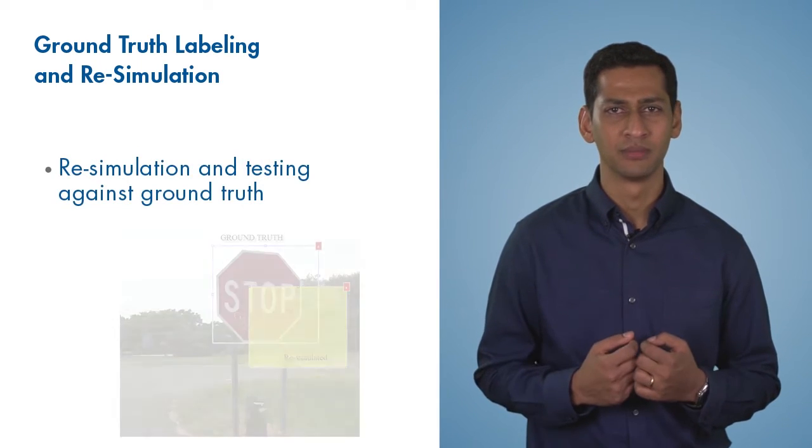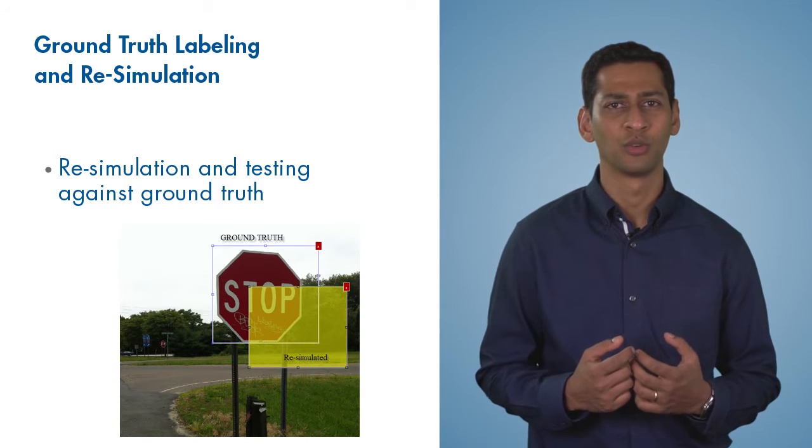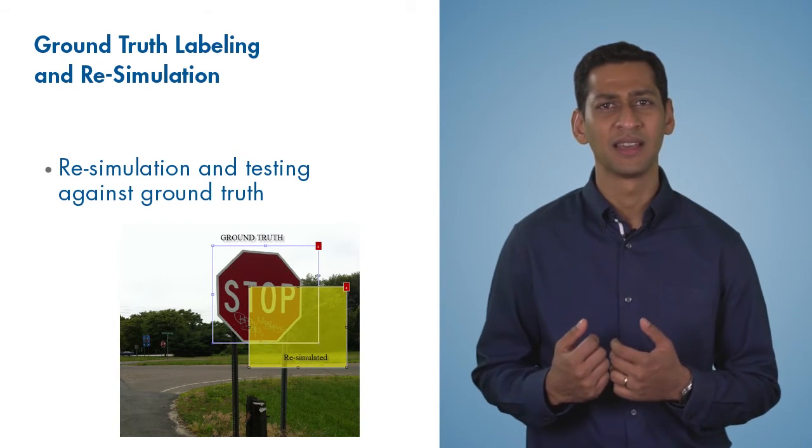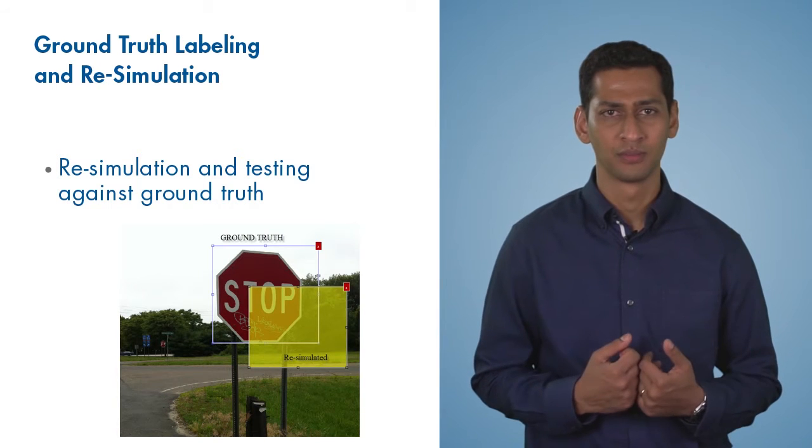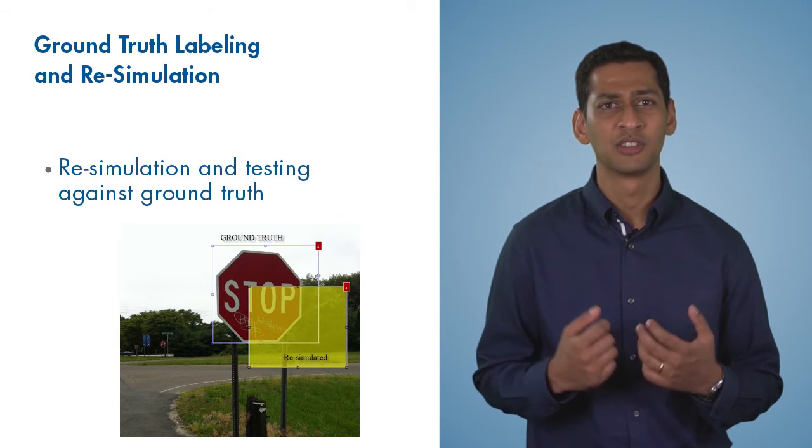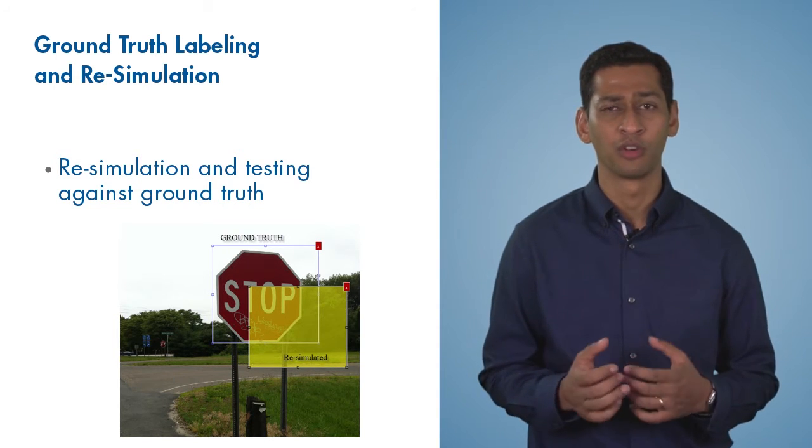The next step involves re-simulation, or running the same data through the actual perception system, comparing what the system perceives against the human-verified ground truth. In reality, this is done over thousands of miles of driving data to see how the perception system performs over a diverse set of driving conditions.